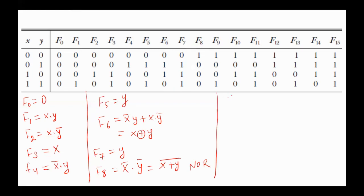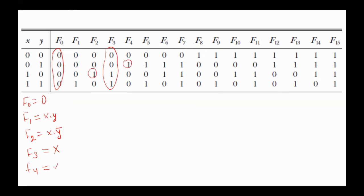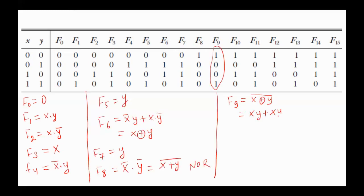F9 is the complement of F6: X exclusive OR Y, complemented, which equals (X AND Y) OR (NOT X AND NOT Y), also known as the equivalence function. It is 1 if the two inputs are equal.